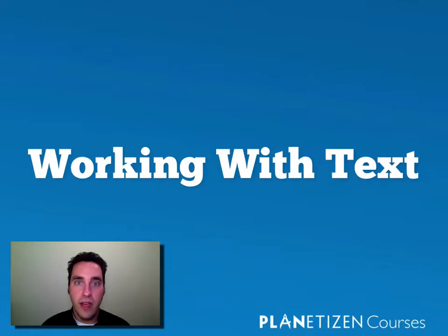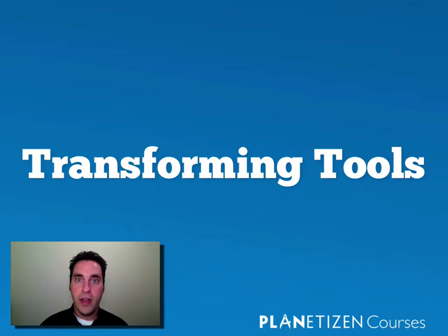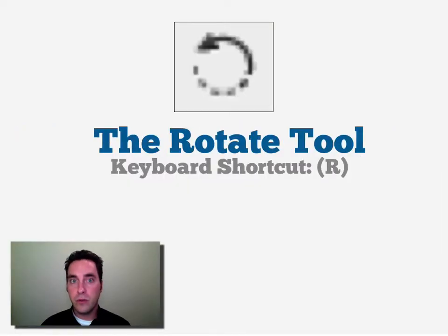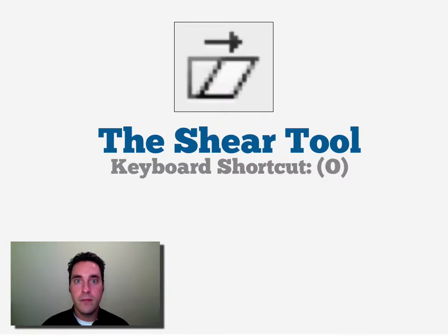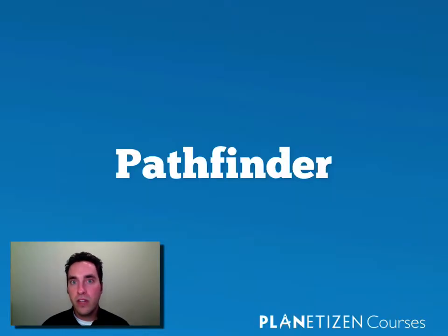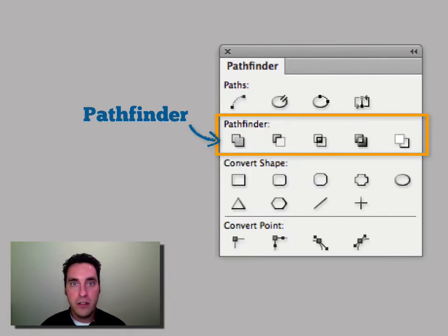We'll talk about how to work with text by using the type tool. We'll talk about how to use transform tools — the free transform tool, the rotate tool, the scale tool, and the shear tool. We'll also cover the use of Pathfinder: how to draw paths and objects and combine them together to create more complex shapes using the Pathfinder tool.